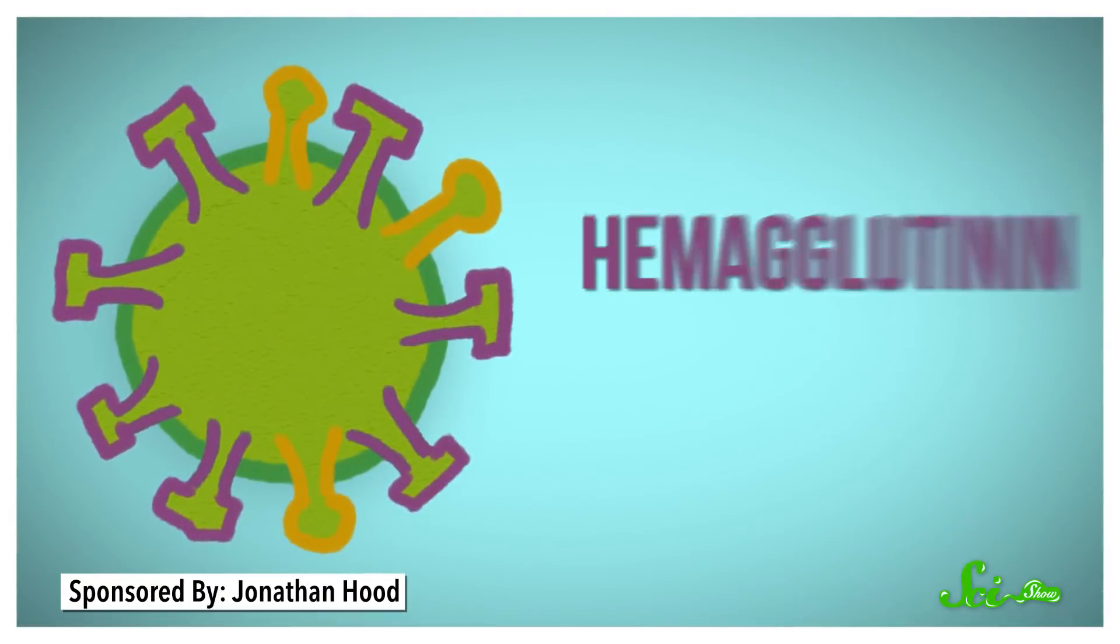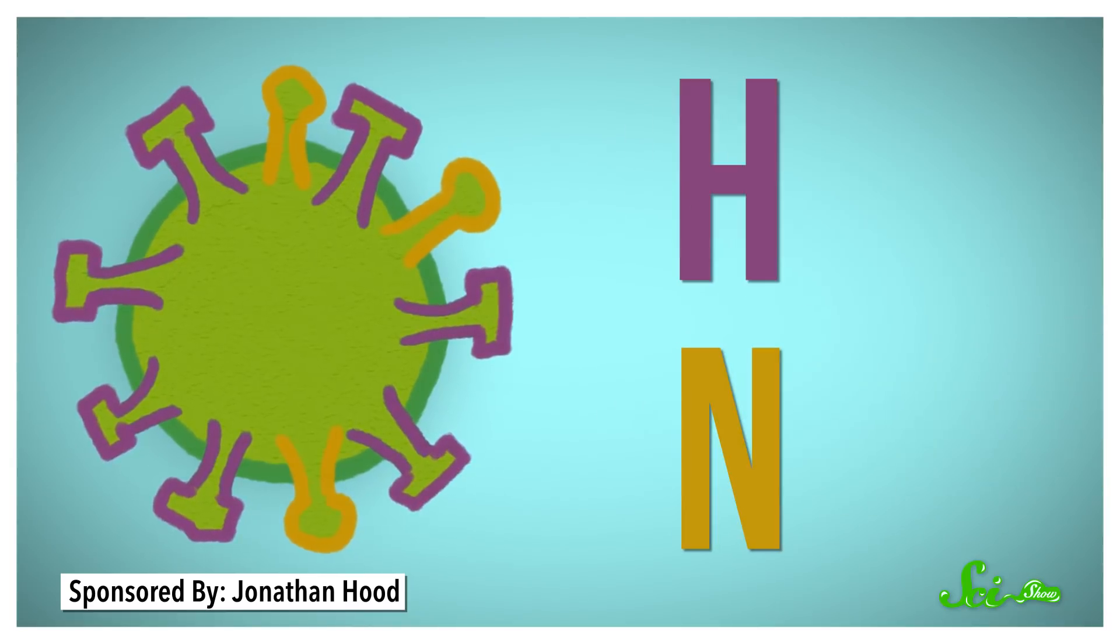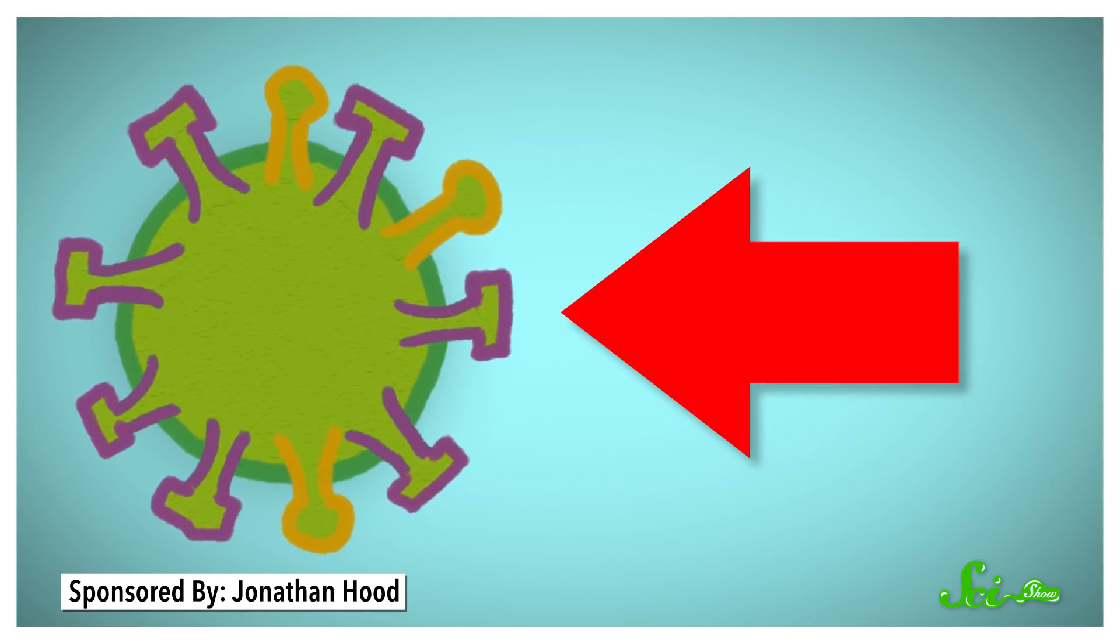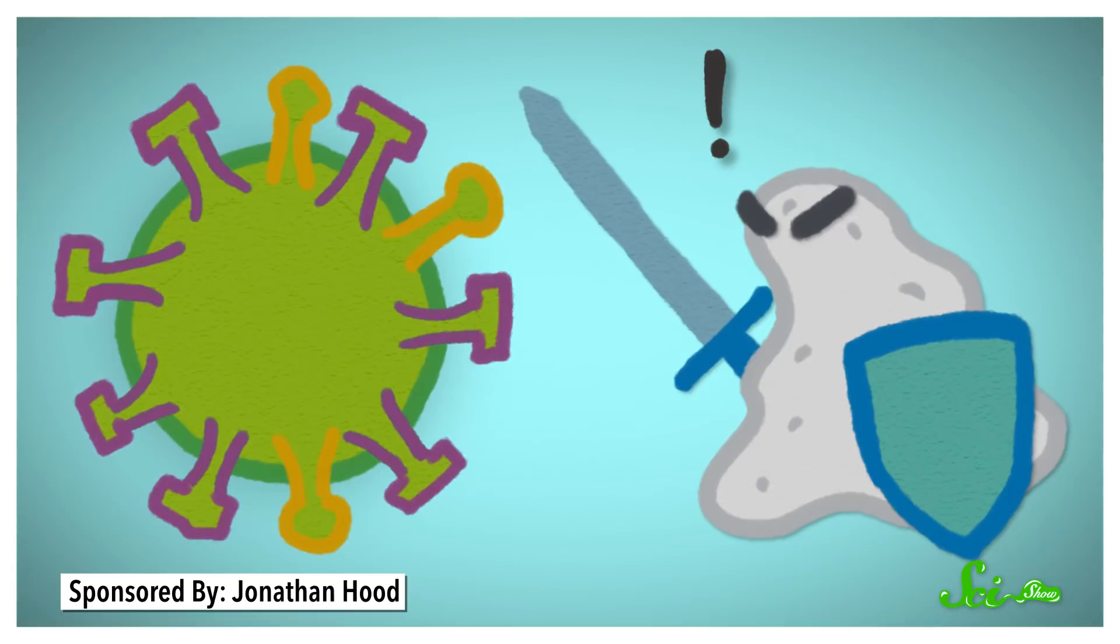The H stands for hemagglutinin, and the N stands for neuraminidase. Each type of these proteins gets a number, like H1 or N2. Since the proteins are on the outside of the virus, they are what your immune cells see and respond to if you get infected.